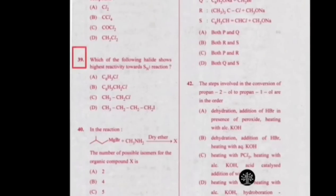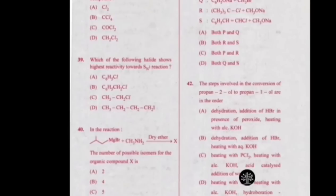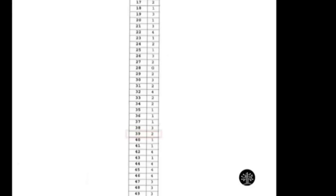For question number 39, option A and option B have a similar start — that is C6H5. In option B, you have CH2CL. If option A and option B are the candidates, we take the help of other options. CH2 is repeated more in option C and option D. This supports our option B. Therefore, among option A and B, option B will be the correct answer. You can verify your answer — question number 39 is option B, meaning option 2.